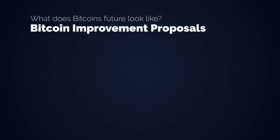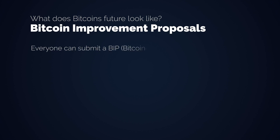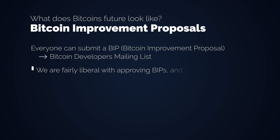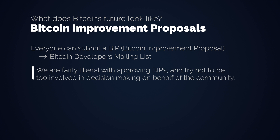First of all, everyone can submit a BIP — a Bitcoin Improvement Proposal — by first addressing the Bitcoin Development Mailing List. The developers don't decide which BIPs will be listed, but check the formal requirements of the proposal. We are fairly liberal with approving BIPs and try not to be too involved in decision-making on behalf of the community. However, it is still a good idea to publicly discuss an idea and receive some feedback from the community before writing a BIP, to prevent wasting your time.